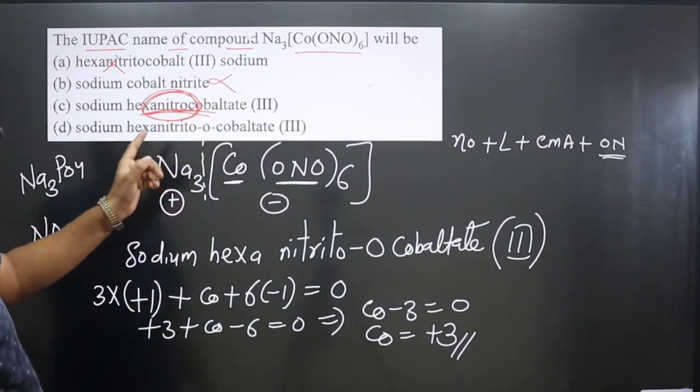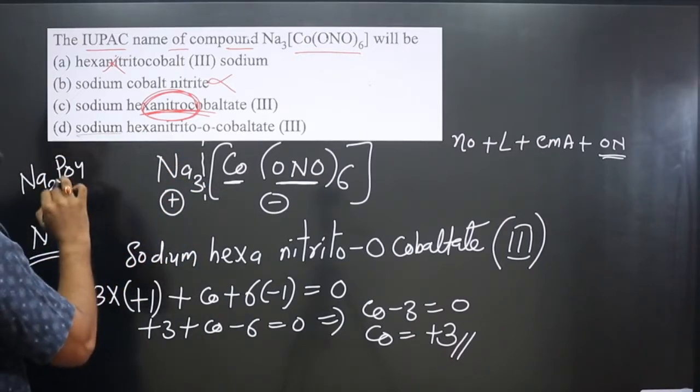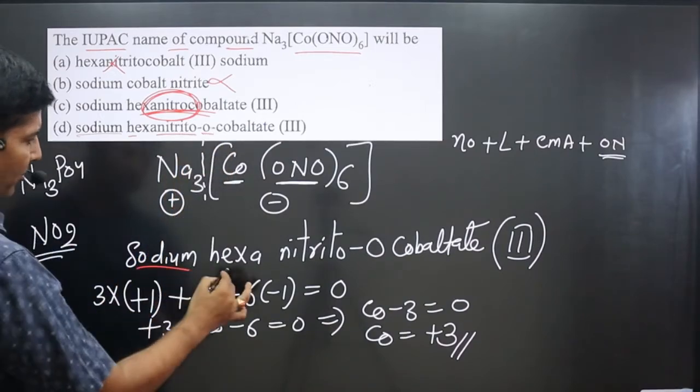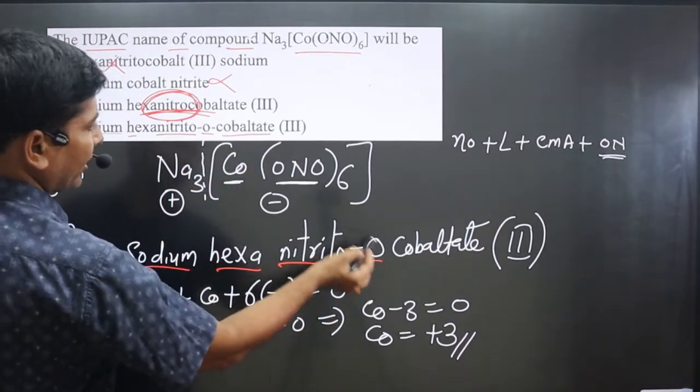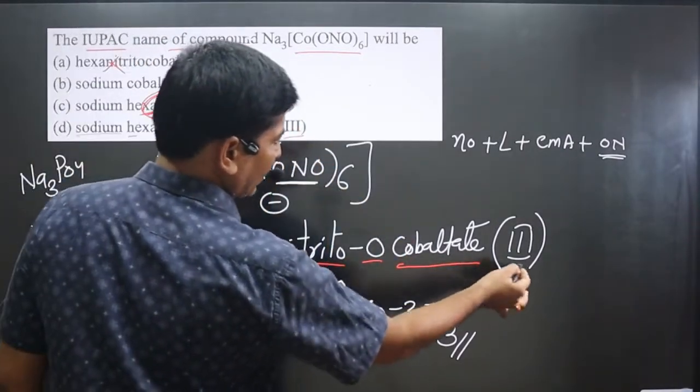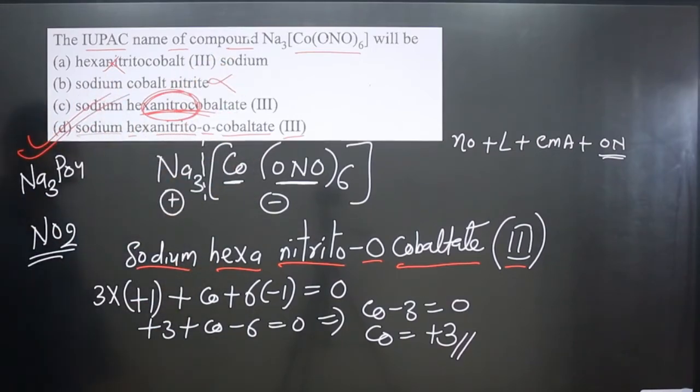Option D makes sense: sodium hexanitrito-O-cobaltate, then (III) for the oxidation number. So you can see option D is correct.